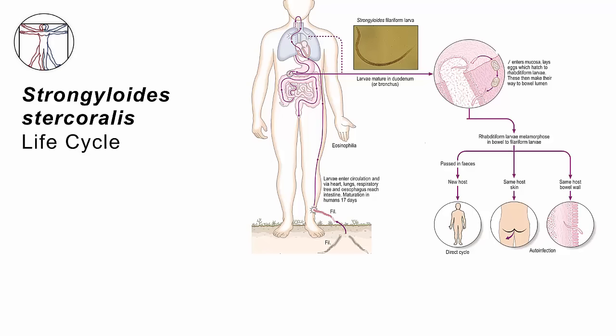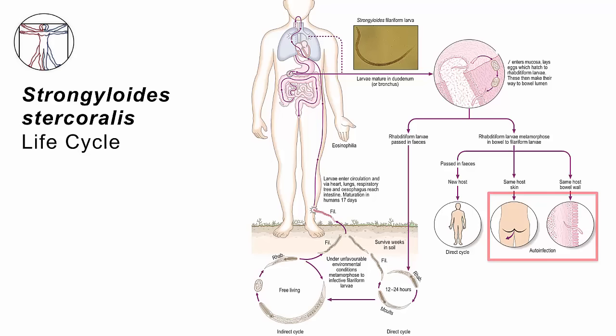So when the patient defecates, it's not eggs that are being passed — it's infectious larvae. Those larvae may then either burrow right back in through the skin of the perianal area after someone wipes themselves after defecation. Or sometimes they don't even need to get outside of the body — they'll burrow right in through the rectal mucosa. We call that auto-infection, and that concept is so key because this is what distinguishes Strongyloides from all the other worms we've talked about. It's also possible to spread this to other people — that's called the direct cycle.